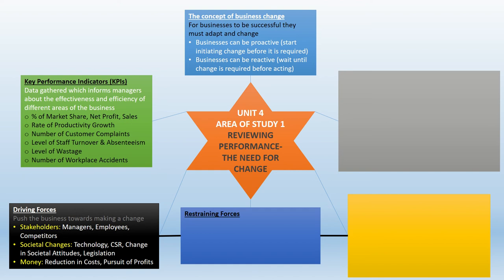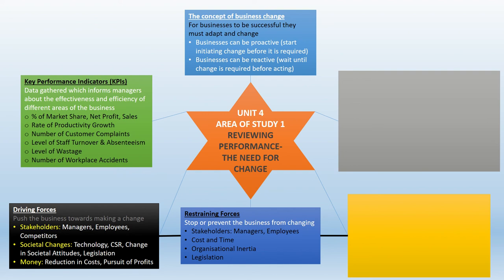Then there are restraining forces — things that prevent a business from wanting to change. Some are similar to driving forces: managers and employees who like how things currently operate and don't want to change. When people are stuck in their old ways, this is called organisational inertia, which can stop a business from moving forward. There can also be barriers in terms of cost and time, or laws making it hard to implement change. You need to be able to identify these forces and explain how they are driving or preventing the business from making a change.